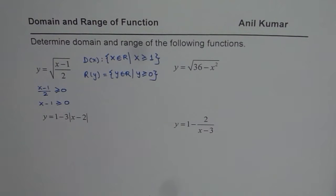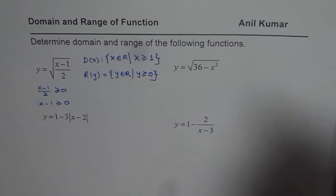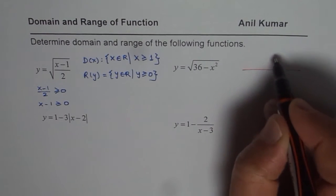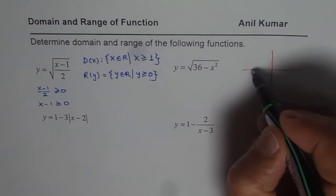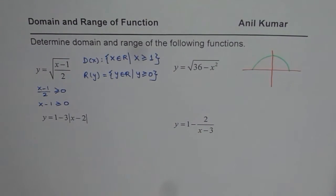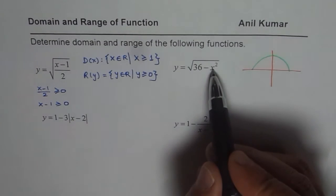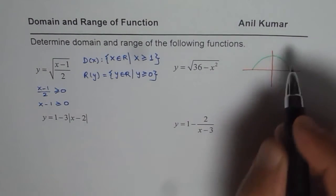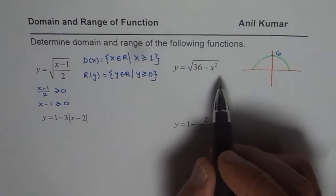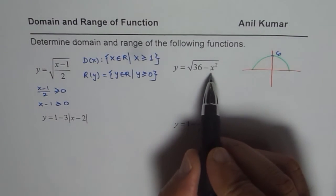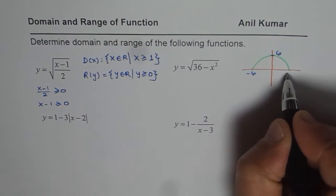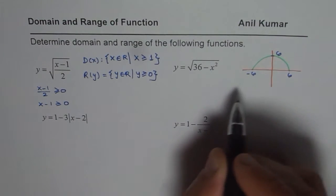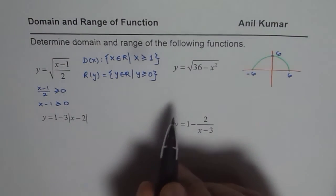The second function is kind of a semicircle. At times we can sketch a function to get a clear idea about domain and range. If I substitute x equals 0, I get square root of 36, so that value is 6. And if I want y to equal 0, then x squared should equal 36, so x is minus 6 or plus 6.